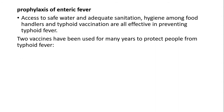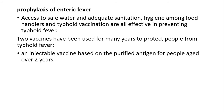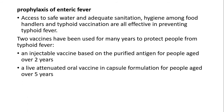Two vaccines have been used for many years to protect people from typhoid fever: first, an injectable vaccine based on purified antigen for people aged over 2 years; and second, a live attenuated oral vaccine in encapsulated formulation for people aged over 5 years.